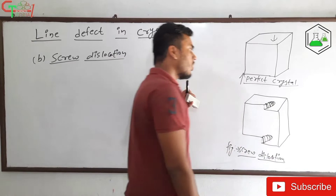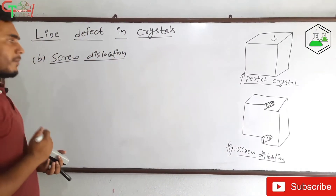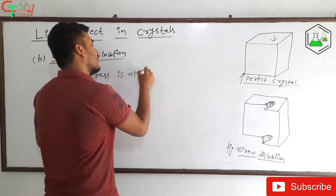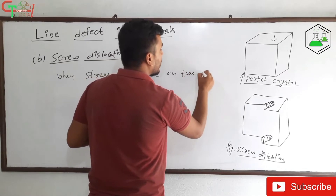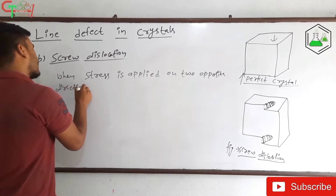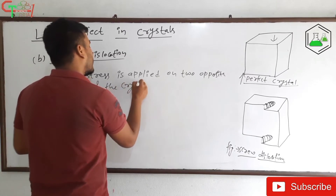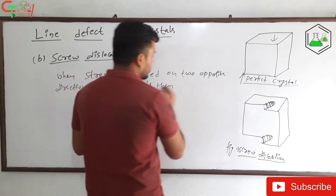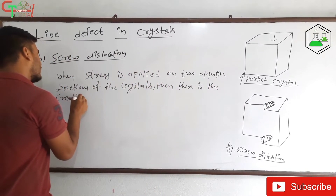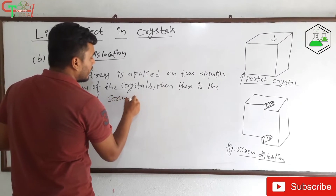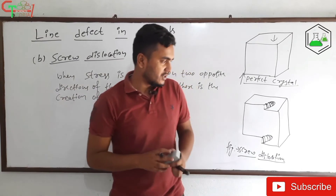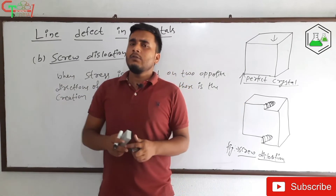When stress is applied in two opposite directions on a crystal, there is the creation of screw dislocation. This is also a very prominent defect found in crystals. Because of the stress, this defect is produced.